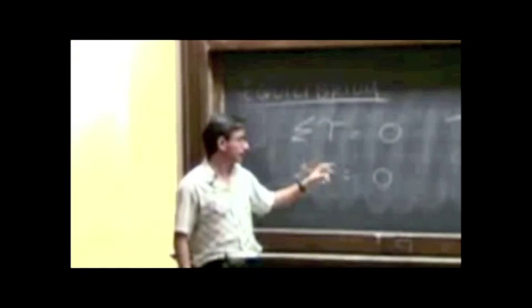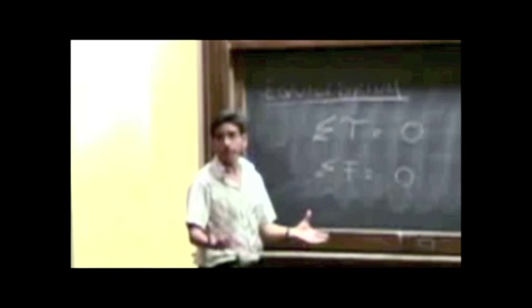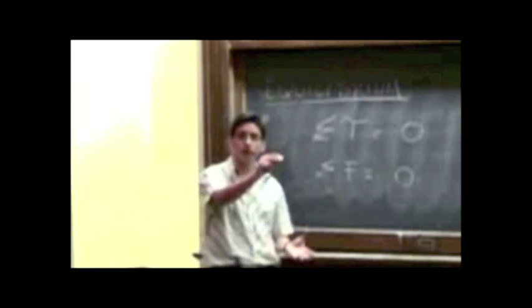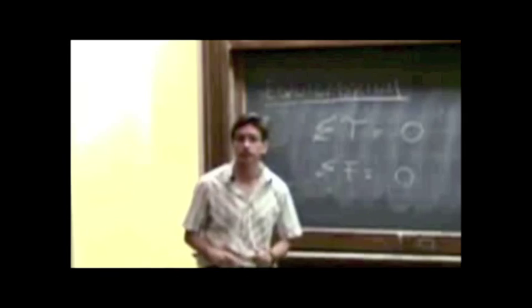We did problems with static equilibrium before that we could solve using just Newton's second law, saying that the sum of the forces was equal to zero if the object was not moving. That has two equations: the sum of forces in the x direction is zero, and the sum of forces in the y direction is zero. Now when you have an extended object — not just a point particle — those are still true, but you have an additional equation: the sum of the torques equals zero.